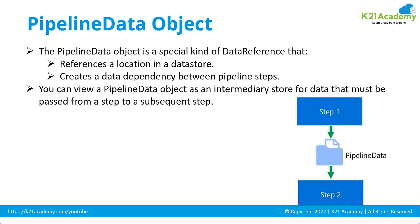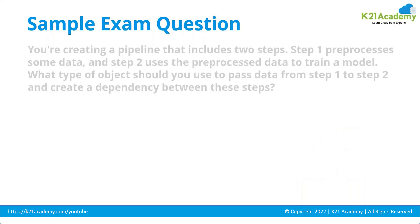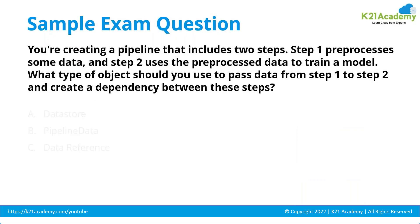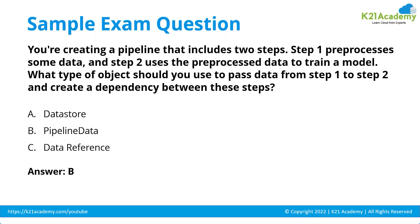When moving data between pipeline steps, you keep it inside pipeline data objects, which hold data temporarily as it moves from one step to the next. The question asks: in a two-step pipeline where step one pre-processes data and step two uses it to train a model, what type of object should you use to pass data between steps? The answer is pipeline data.